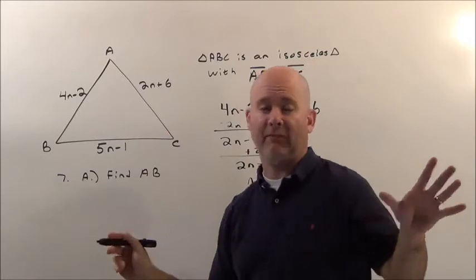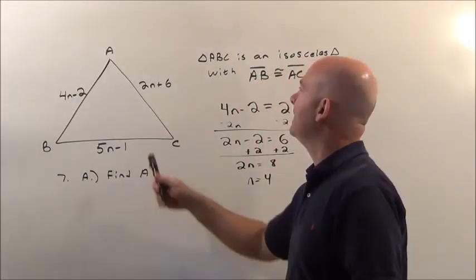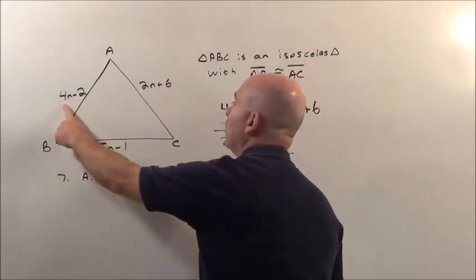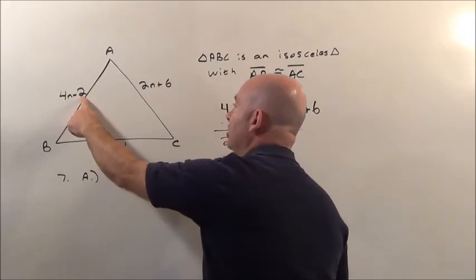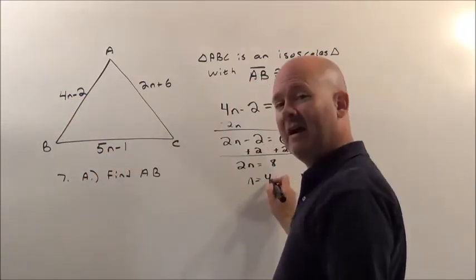Now remember the answer is not 4. It didn't say what is n. It said find the distance from A to B. The expression that represents that distance is 4 times whatever n is take away 2. So I've got to do 4 times whatever n is. Well what did we find n to be? 4.